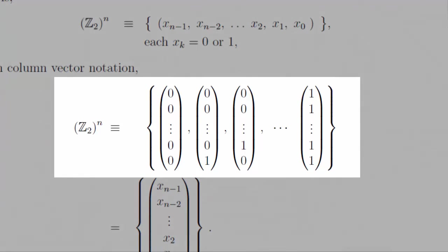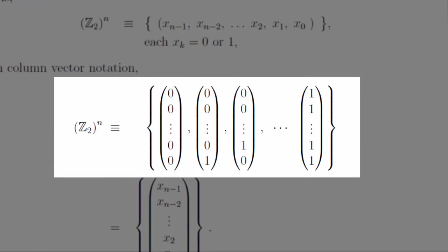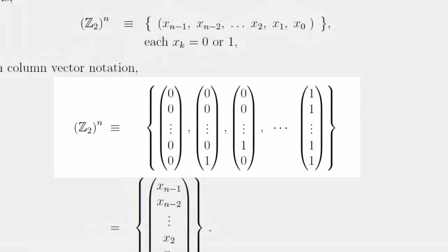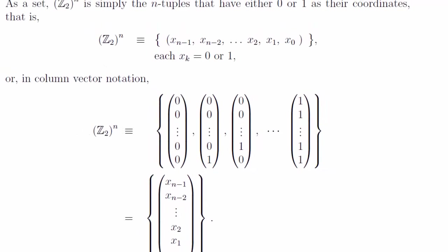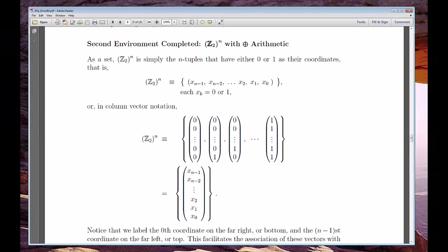Now, this is not a Hilbert space, just an oddball vector space. The most notable weirdness of it is that its vectors are added using mod 2 addition applied component-wise. We designate this space by Z sub 2 all raised to the N.